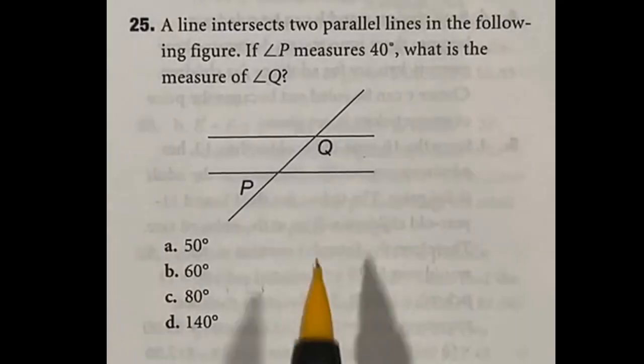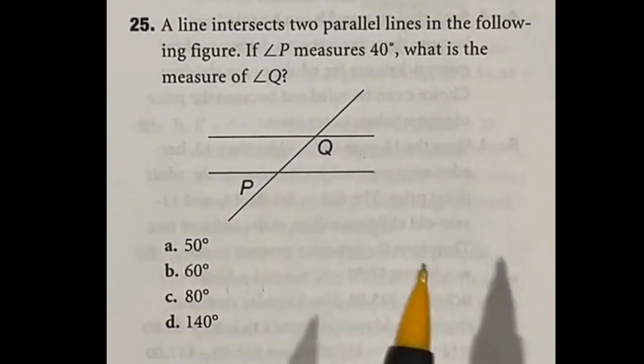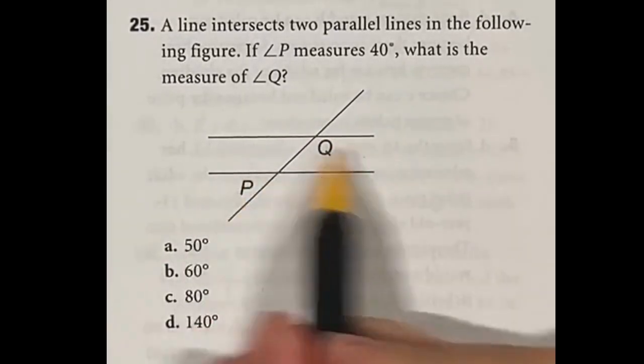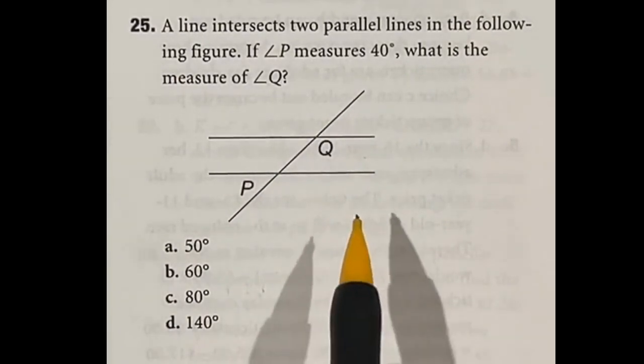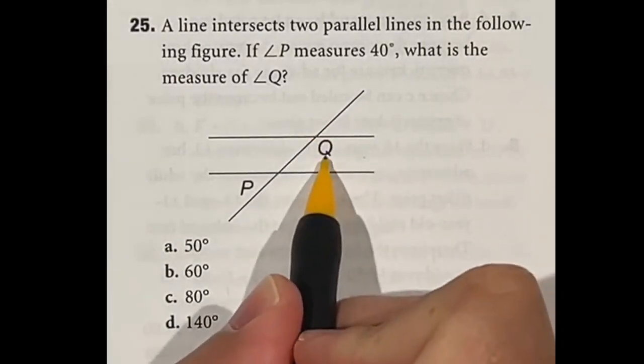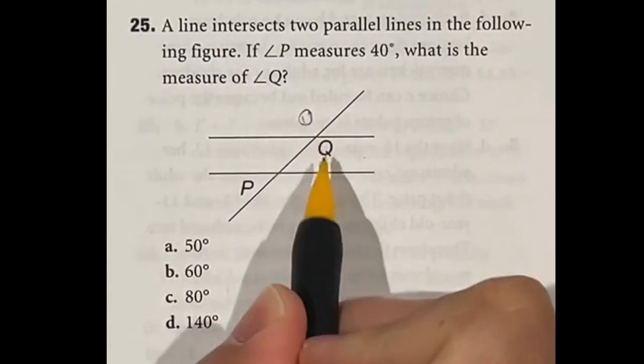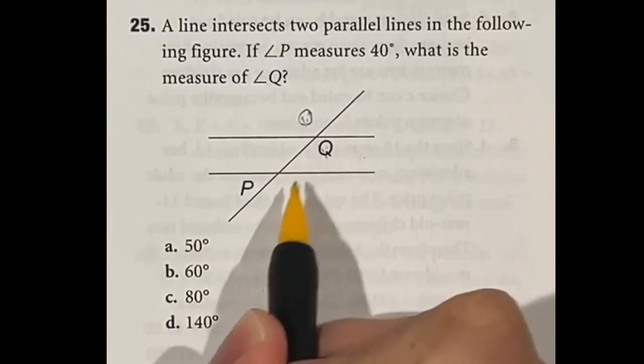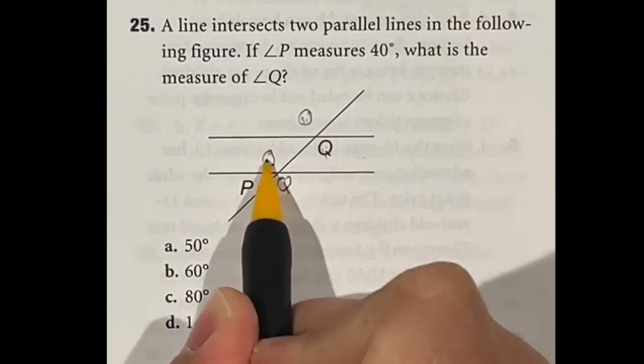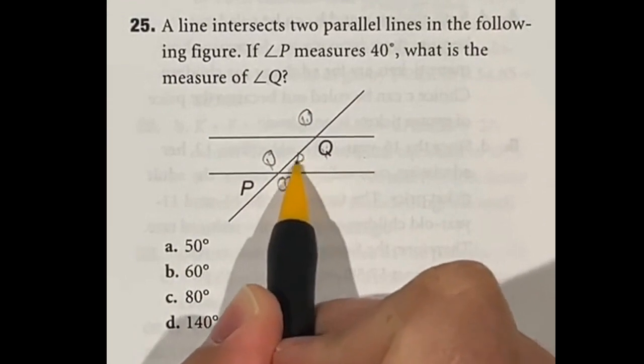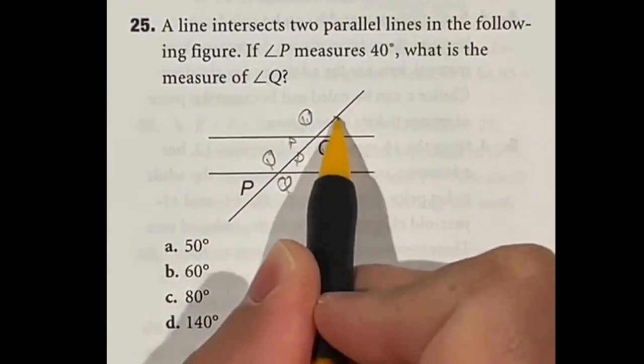So in high school math this is an incredibly popular figure called a transversal where you have a line going through two parallel lines and when you're dealing with a transversal some of these angles end up being the same. This Q right here would be the same as this guy here by a vertical angle theorem and they're also the same down here. So if that guy's Q up there so is this one and so is this one. Likewise P can be filled in and all of the other angles.